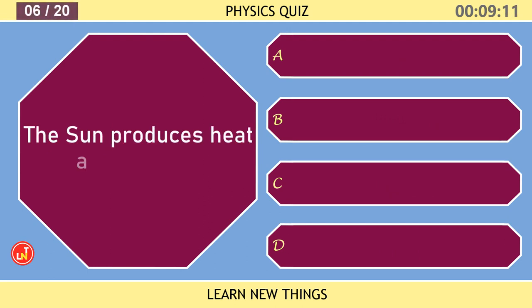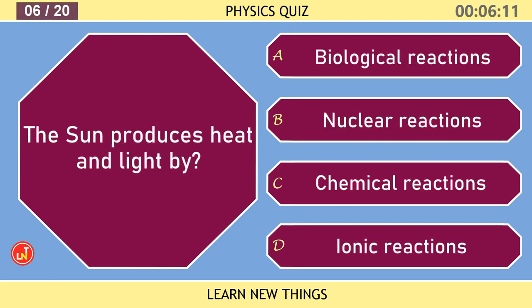The sun produces heat and light by? Nuclear reactions.